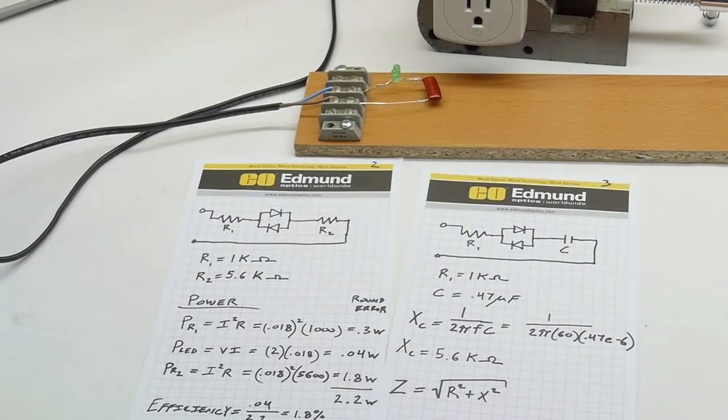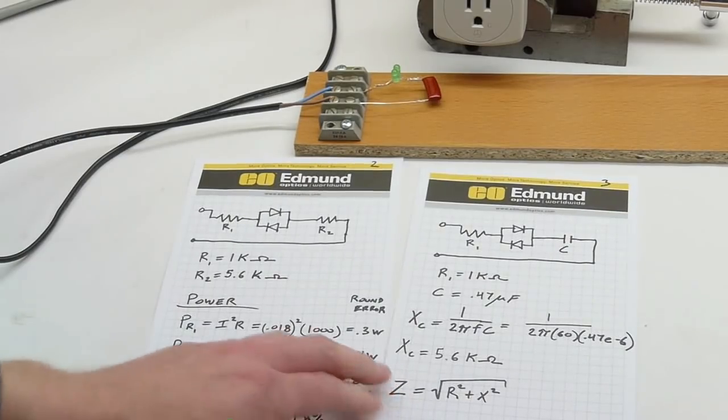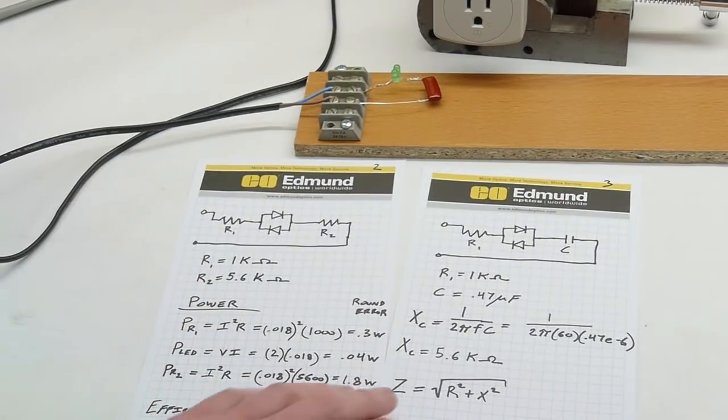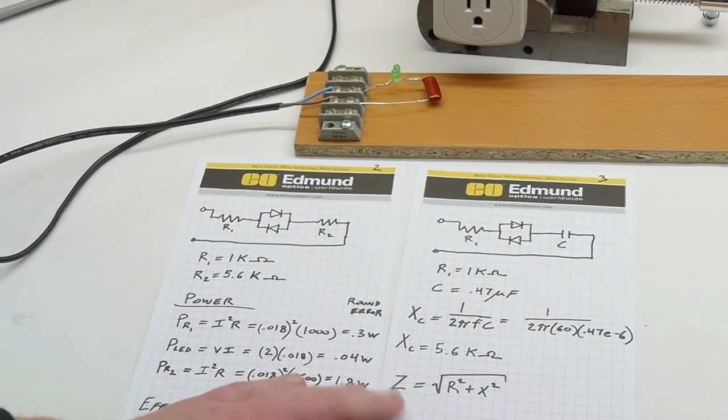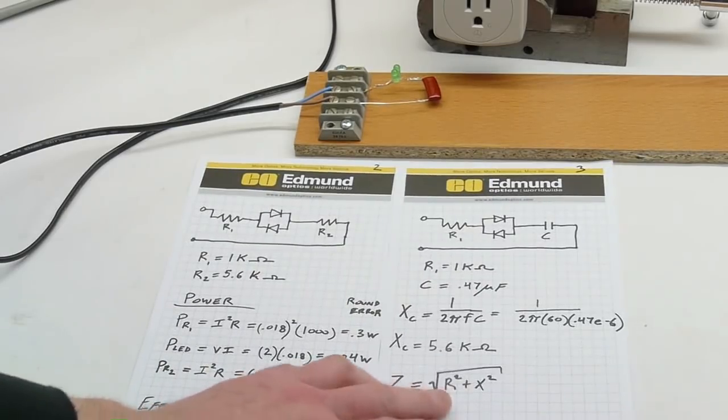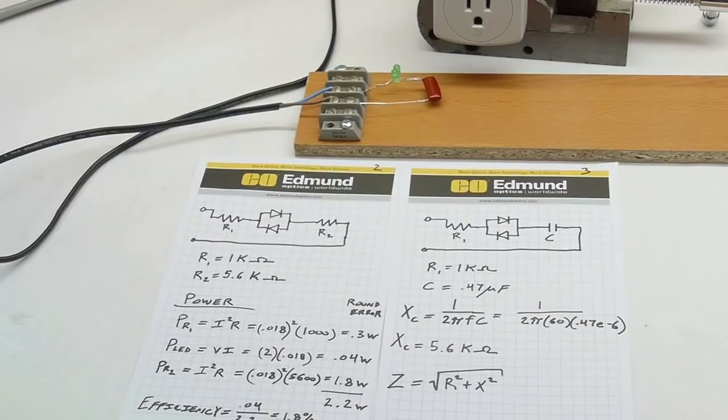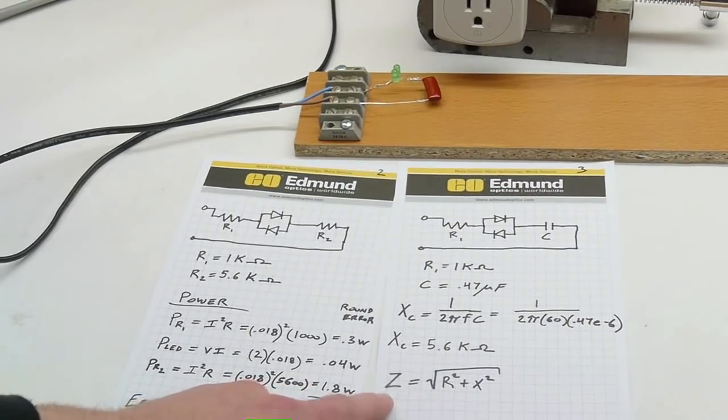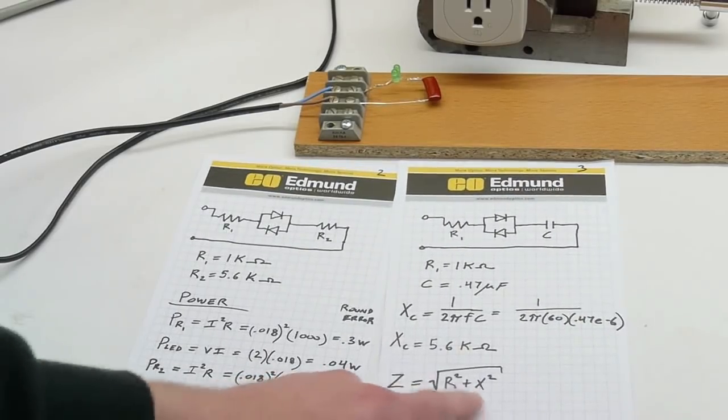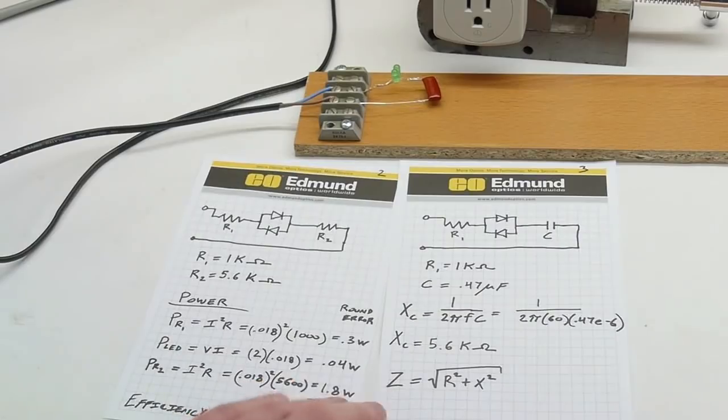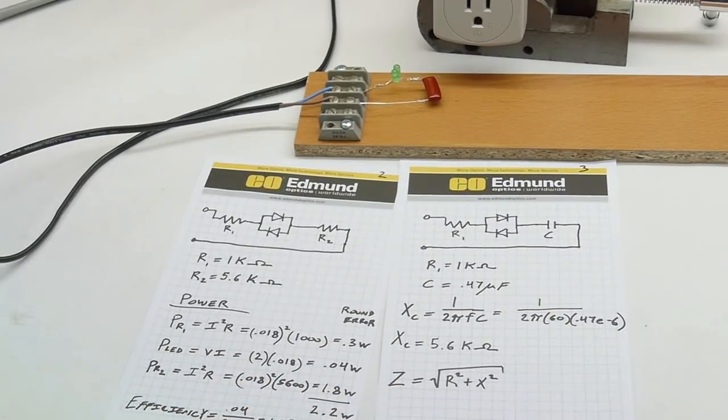So what's impedance? Impedance is the combination of reactance and resistance. Unfortunately, we can't just add them together. Impedance, which is represented by Z, is equal to the square root of the resistance squared plus the reactance squared. And you geometry guys out there will see that this is how to calculate the length of a hypotenuse, knowing the leg lengths of a triangle. So we'll get into this later. But just for now, I just wanted to show you where impedance comes from.